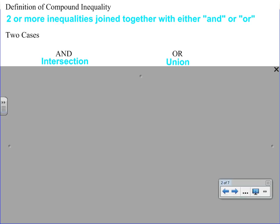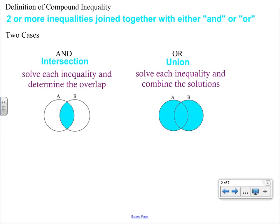When solving a compound inequality in the AND case, you solve each inequality and then determine the overlap — what the two inequalities have in common. In the OR case, you still solve each inequality separately, but then you combine the solutions. So if A was one solution and B was the other, the OR case colors everything in, while the AND case includes only the overlap.